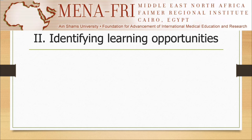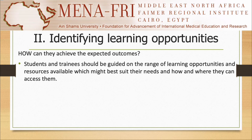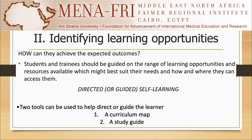The second approach for learning facilitation is identifying learning opportunities. In this approach, we show students how they can achieve the expected outcome. Students or trainees should be guided on the range of learning opportunities and resources available, which might best suit their needs, and how and where they can access them. This gives rise to the concept of directed or guided self-learning. Tools that help identify learning opportunities include the use of a curriculum map and study guide, which help direct and guide the learner.